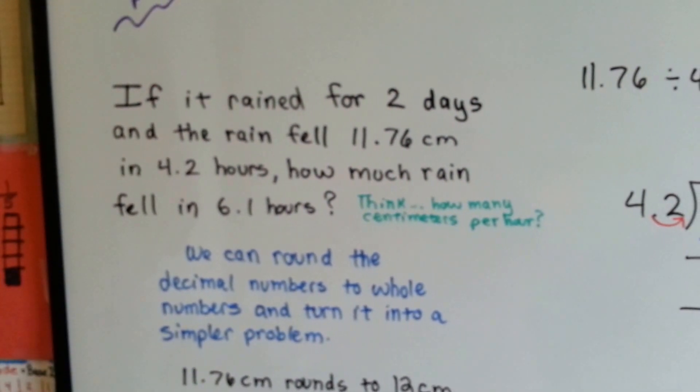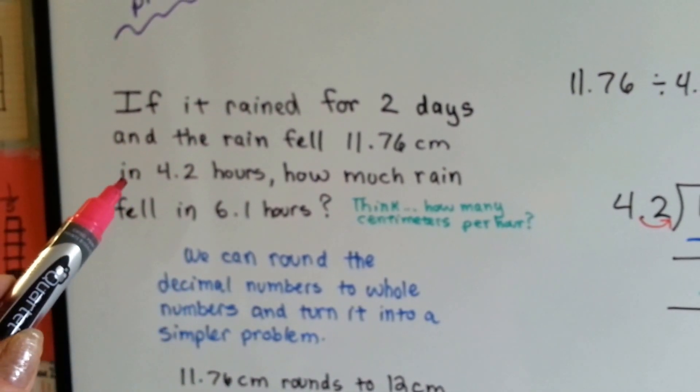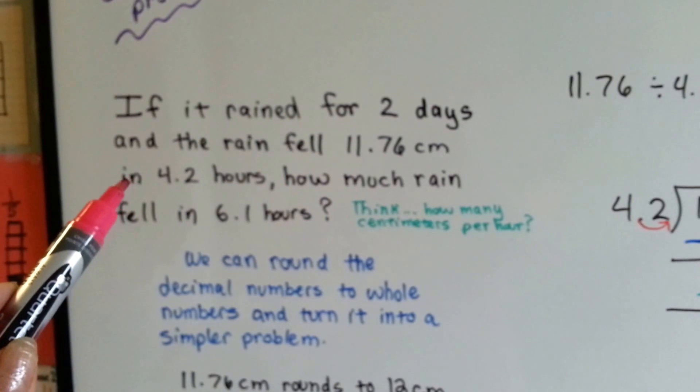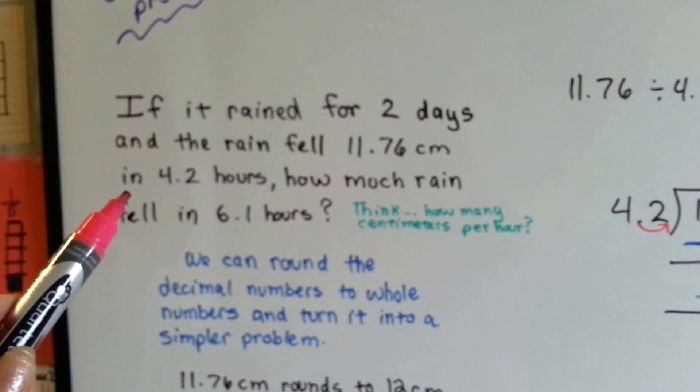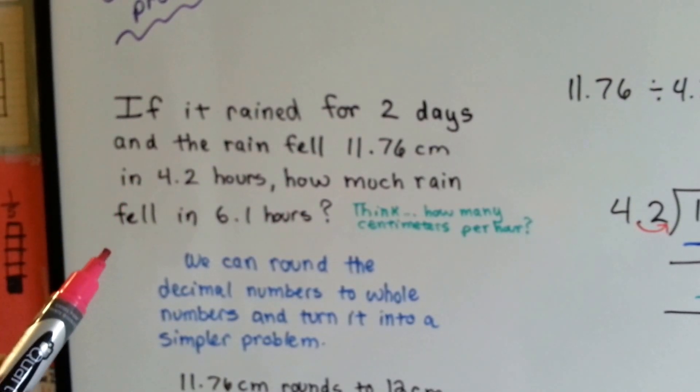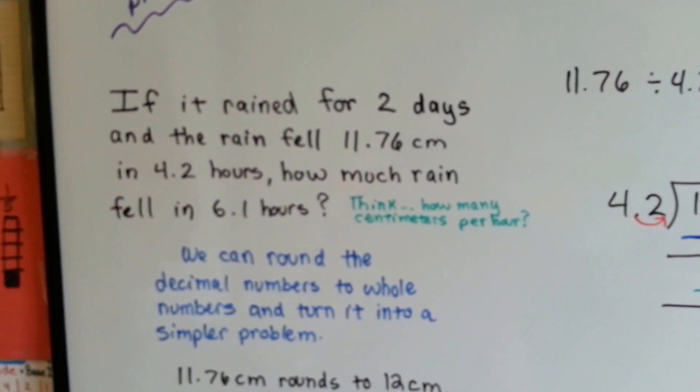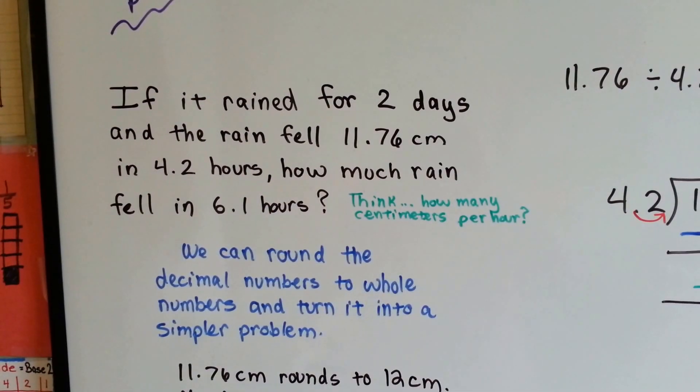Solve that as a guide. Then we can use the accurate numbers. If it rained for two days and the rain fell 11.76 cm in 4.2 hours, how much rain fell in 6.1 hours? We've got to think, how many centimeters per hour did it rain?